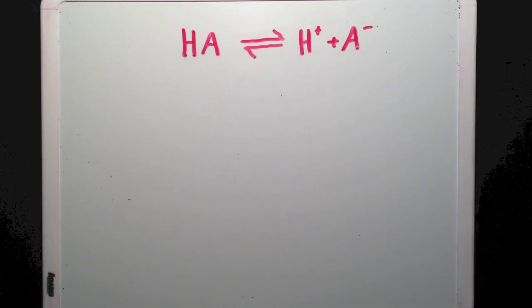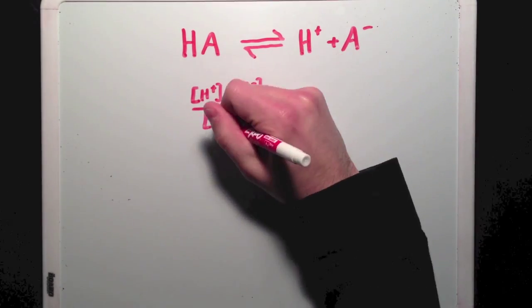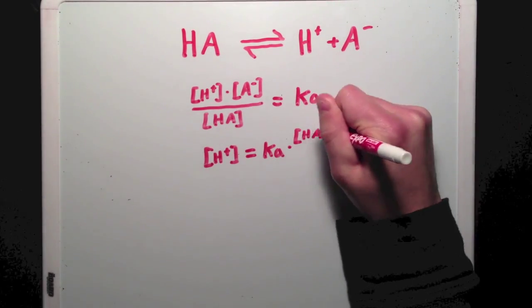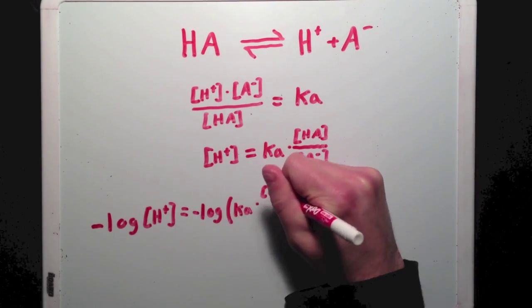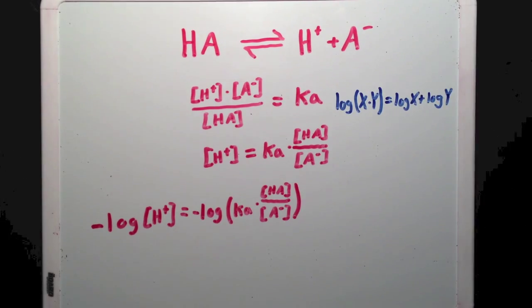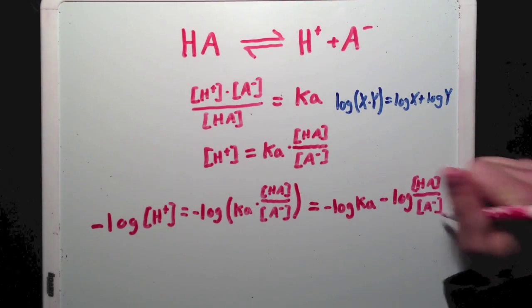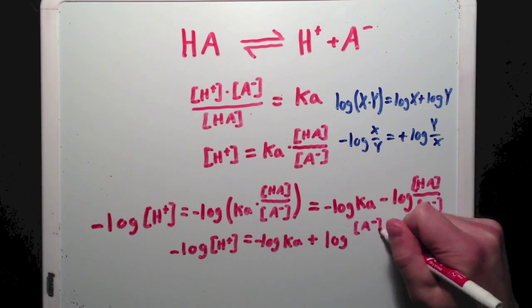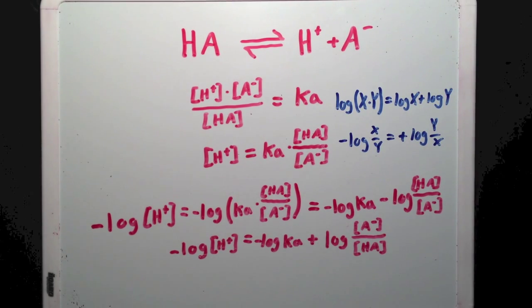Let's do some math. Remember that Ka is the acid dissociation constant. Let's isolate this expression for the proton concentration, and then take the negative log of both sides of the equation. Using log rules, we can expand this equation and then simplify further. Now, don't worry if you need to watch this section of the video a few times. Deriving equations can be very challenging.